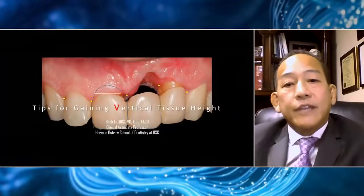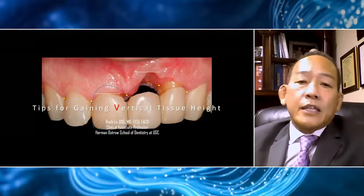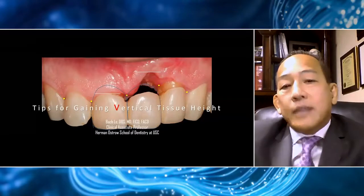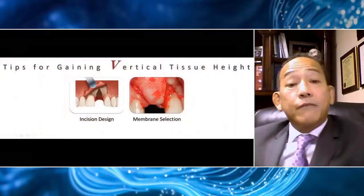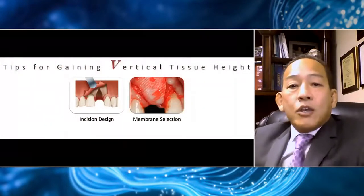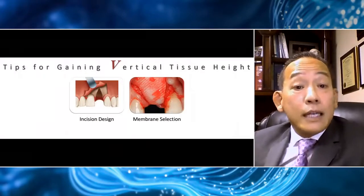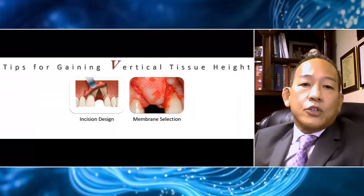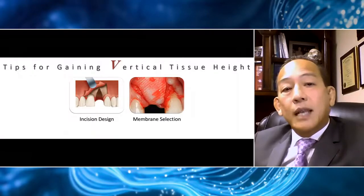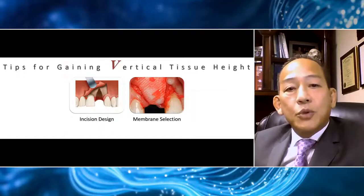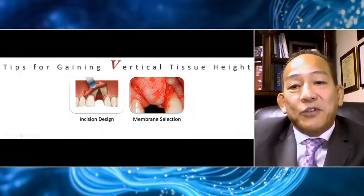Most of us can attest to the challenge we face when we don't have enough vertical soft tissue, especially to achieve an aesthetic result. Today, specifically, I'd like to talk about two techniques that have been very helpful over the years for me — hopefully simple techniques you can use to achieve a better result, or at least to gain a little bit of that extra vertical tissue height. Those two tips involve incision design and membrane selection, and the co-relationship of these two concepts.